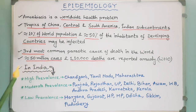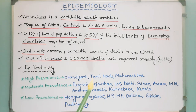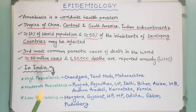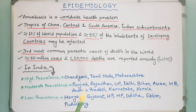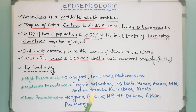Epidemiologically, India can be divided into three regions. High-prevalence states include Chandigarh, Tamil Nadu, and Maharashtra. Moderate-prevalence states include Punjab, Rajasthan, Uttar Pradesh, Delhi, Bihar, Assam, West Bengal, Andhra Pradesh, Karnataka, and Kerala.